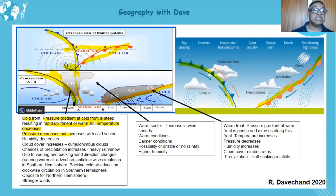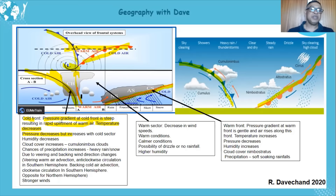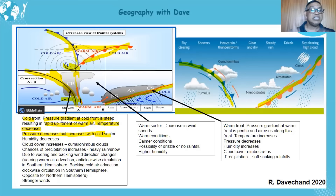Temperature decreases because it's a cold front coming in. Pressure decreases because the air is uplifted — less air near the surface. As the cold sector arrives, there's more air subsiding, so pressure increases. Humidity decreases in the cold sector.